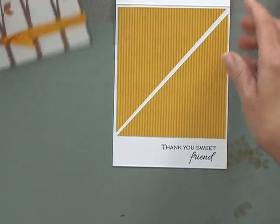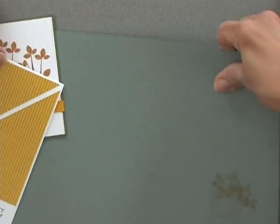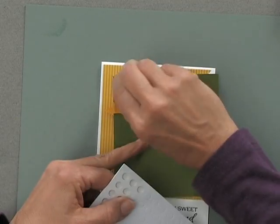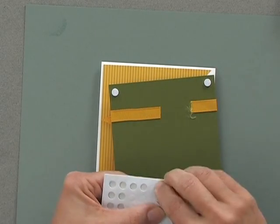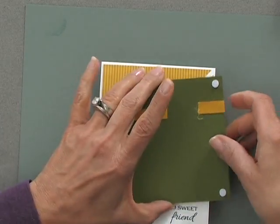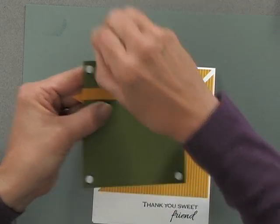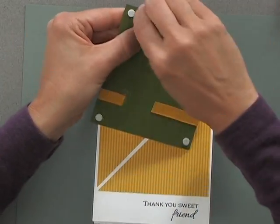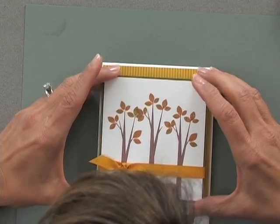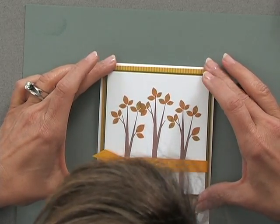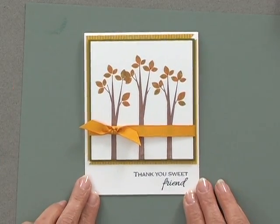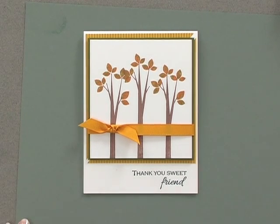And then I'm going to apply the focal image part of the card onto my card base using some quarter inch pop dots. One on each corner will do it. You can always add a few more if you feel like you want to have three going across the top or the bottom because it is a larger focal image, but two will hold it. As long as you press down nice and hard on them once you attach them, you should be fine. And that is going to go right about there. And there is my finished card project.